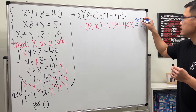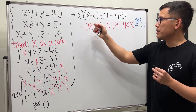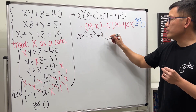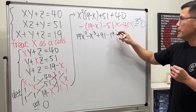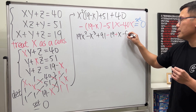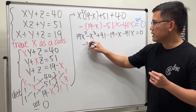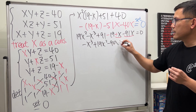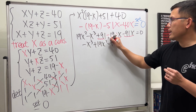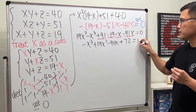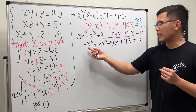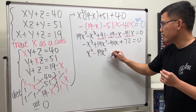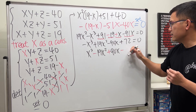We set the determinant equal to zero. Expanding, we get 19x² − x³ − 90x − 51 − 91x + 72 = 0, which simplifies to −x³ + 19x² − 90x + 72 = 0. Multiplying through by −1 gives: x³ − 19x² + 90x − 72 = 0.